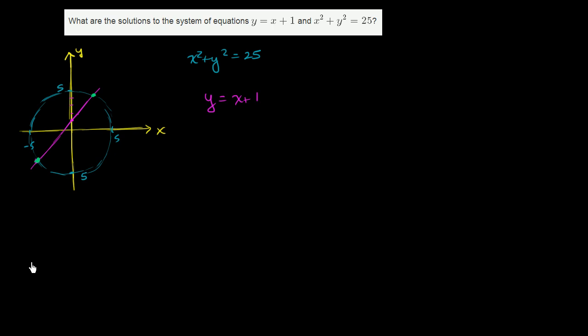So how do we actually figure that out? Well, the easiest way is to substitute one of these constraints into the other constraint. And since they've already solved for y here, we can substitute y in the blue equation with x plus 1 with this constraint right over here.